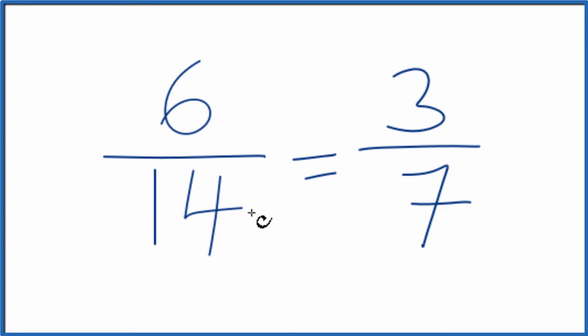The fraction 6/14, we can reduce that down to 3/7. We can't reduce this any further, and these are equivalent fractions. If you divide 3 by 7 or 6 by 14, you're going to get the same decimal answer. They're equal, it's just that we've simplified or reduced 6/14 down to 3/7.